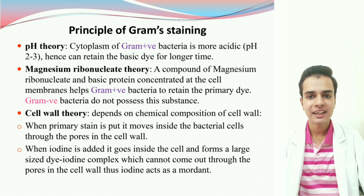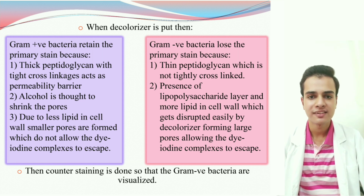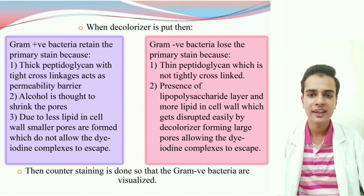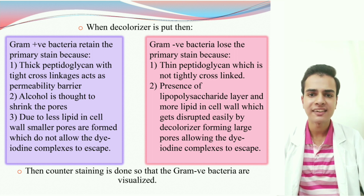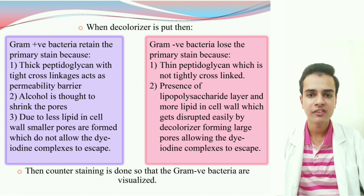Till now, the events were the same in all bacteria. The difference comes when the decolorizer is put. When the decolorizer is put, the Gram-positive bacteria have a tendency to retain the primary stain, while the Gram-negative bacteria have a tendency to lose the primary stain. This is attributed to the differences in their cell wall composition. In the Gram-negative bacterial cell wall, there is a lipopolysaccharide layer and there is more lipid content. The decolorizer we are using is basically an organic solvent that can easily dissolve the lipid. Thus, on the action of the decolorizer, in the Gram-negative bacterial cell wall, large pores are formed through which the dye-iodine complex can easily escape. While in the Gram-positive bacterial cell wall, the lipid content is very less, and thus the new pores formed are very small in size and very few in number. That is the reason why the larger dye-iodine complex cannot easily escape through the Gram-positive bacterial cell wall.